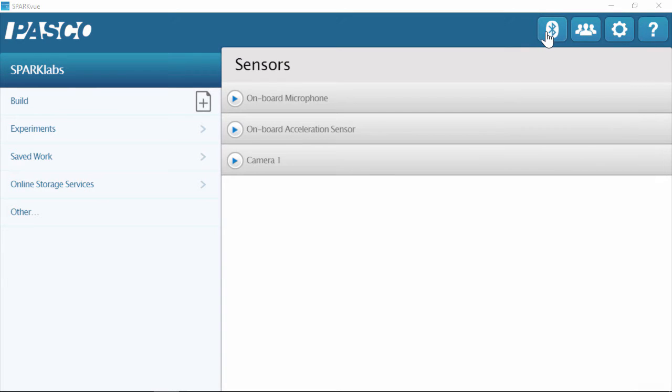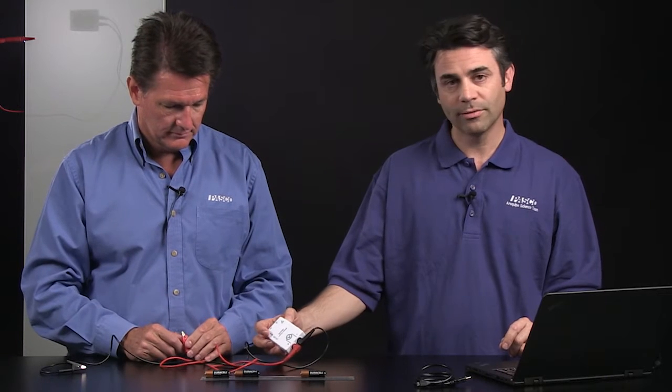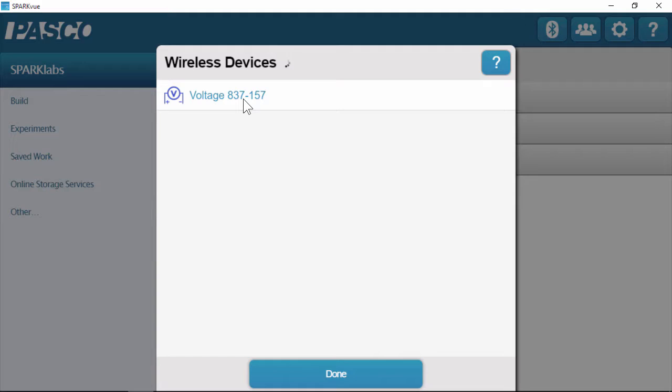So now I can pair to SparkView. In SparkView, I'm going to touch my Bluetooth icon. It's going to find the sensors in the room. There's a voltage sensor. I see the ID number here and on the device to make sure I'm pairing to the right one.